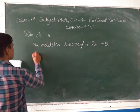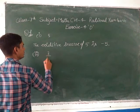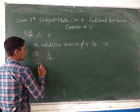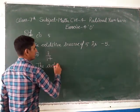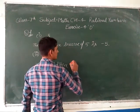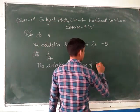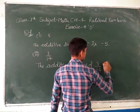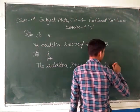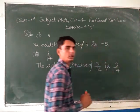Now the next is the third part. The third part is 3 upon 14. The additive inverse of 3 upon 14 — can we write it with a negative sign? Yes, it is minus 3 upon 14.